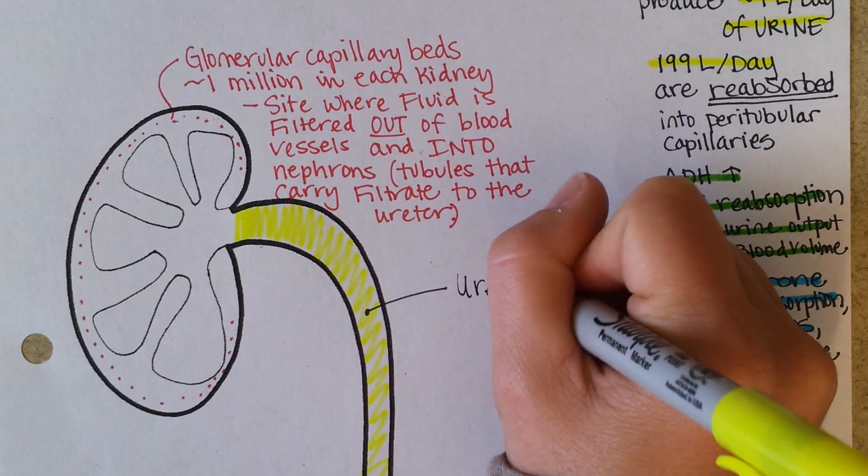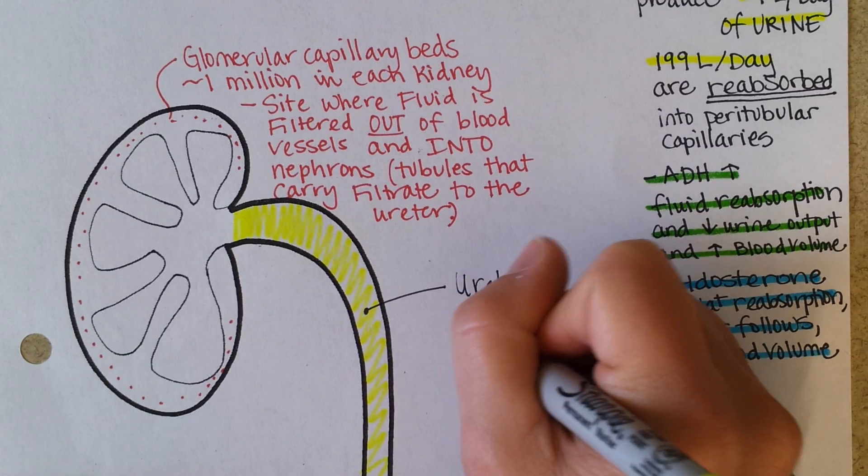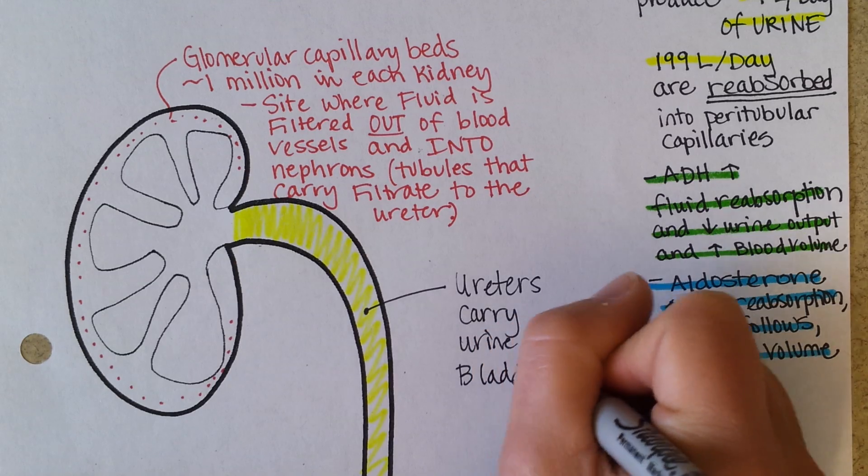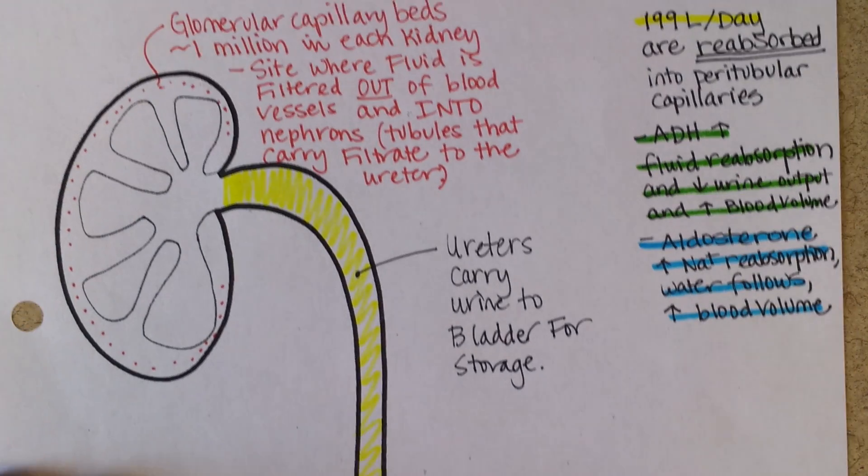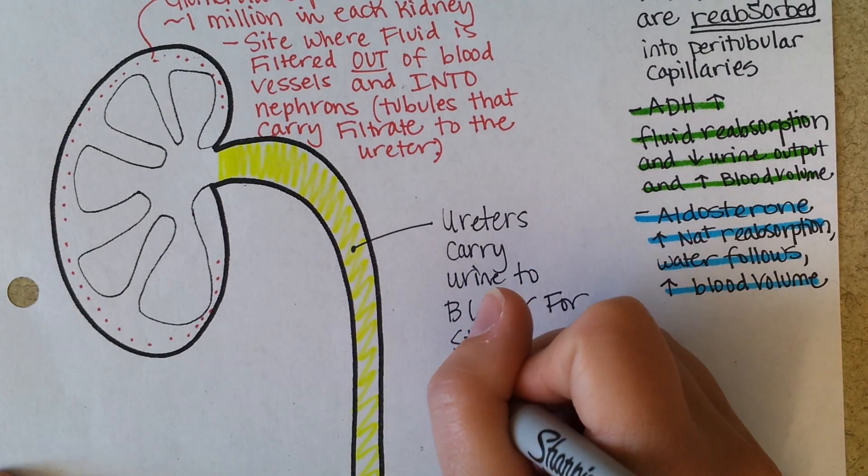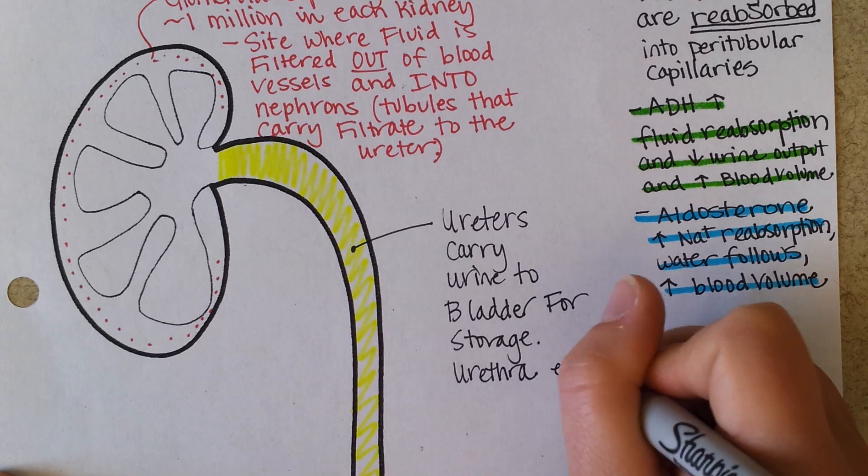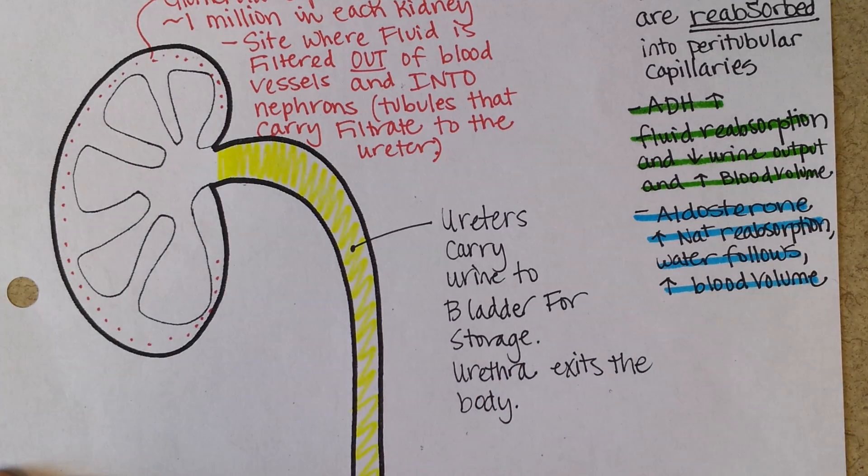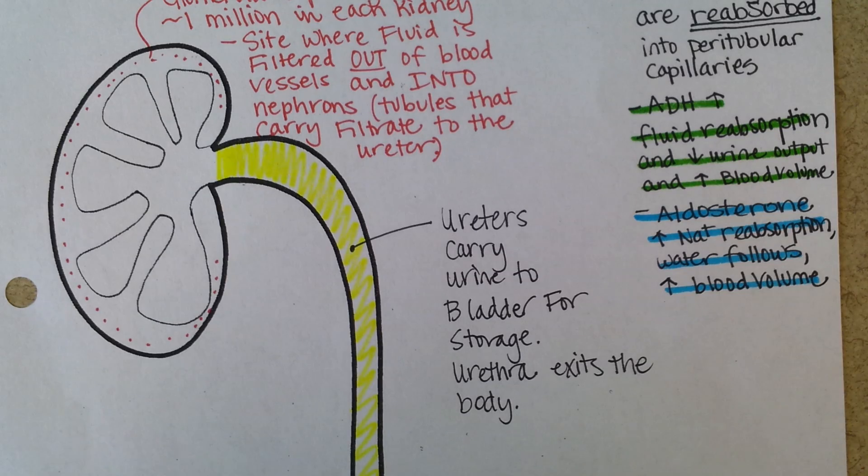Okay, so the ureter carries the urine to the bladder for storage. And then the urethra exits the body. The urethra is found in the penis in men, and then it's a separate opening from the genital tract, the vagina, in females.